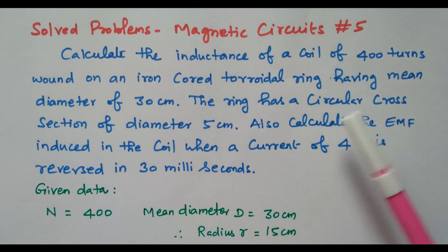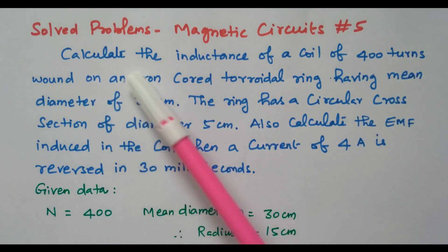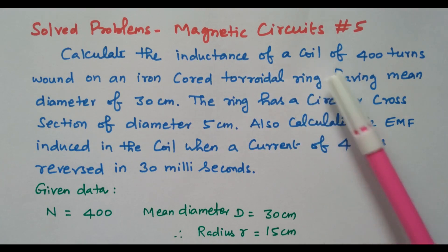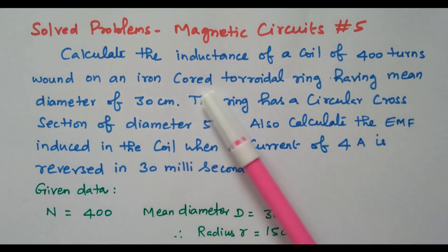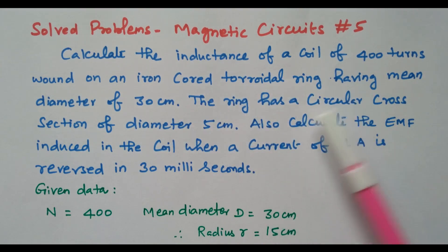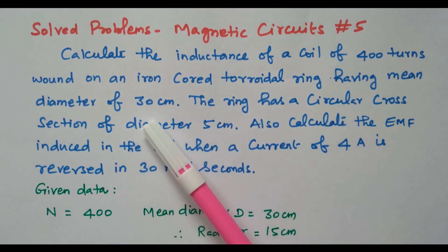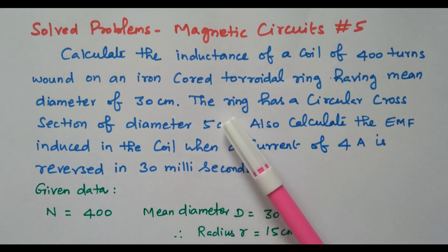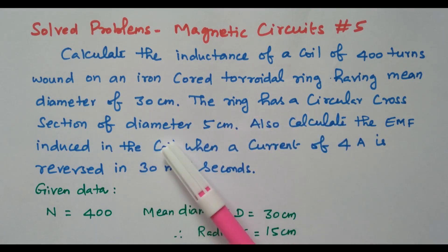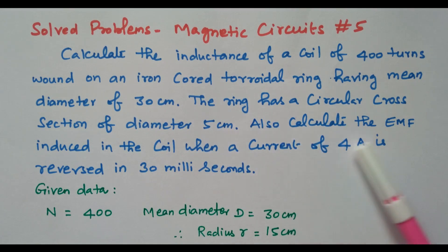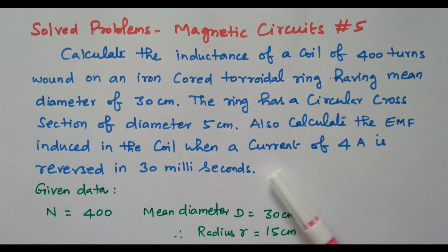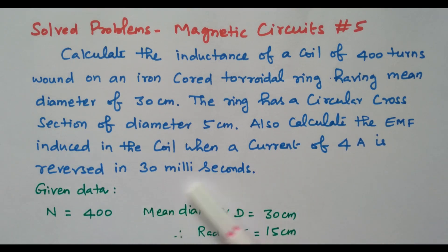Now we will go to the first problem. Calculate the inductance of a coil of 400 turns wound on an iron-cored toroidal ring having mean diameter of 30 centimetre. The ring has a circular cross-section of diameter 5 centimetre. Also calculate the EMF induced in the coil when the current of 4 ampere is reversed in 30 milliseconds.